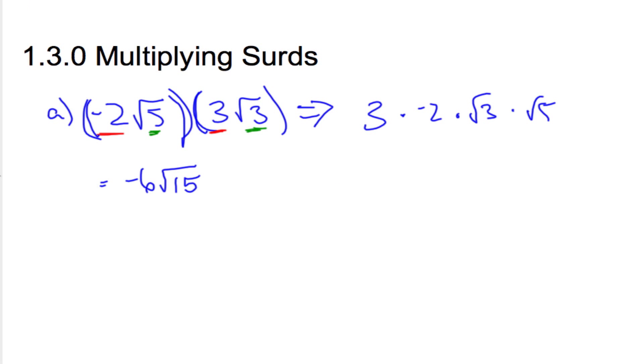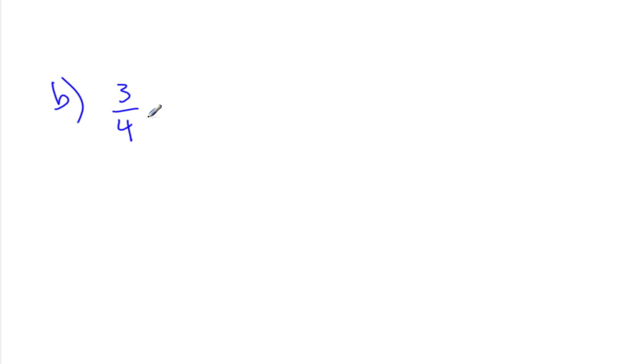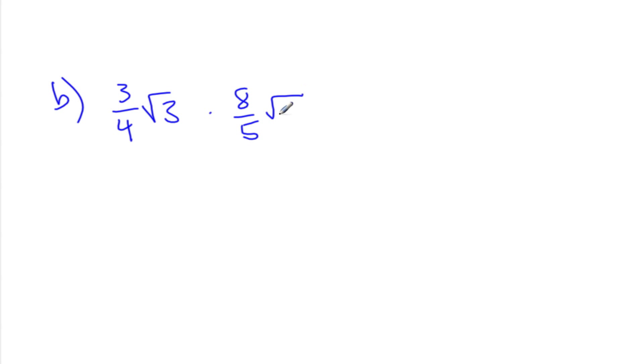Okay, let's try another example. So we're going to do the second example, B, and we're going to use some fractions here. So I get 3 over 4 square root 3 times 8 over 5 square root 18.